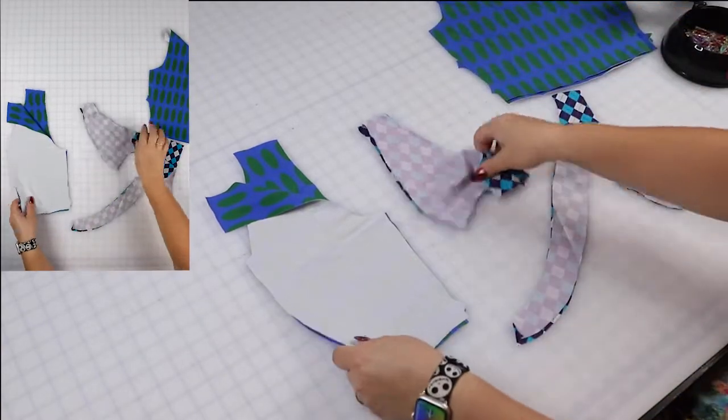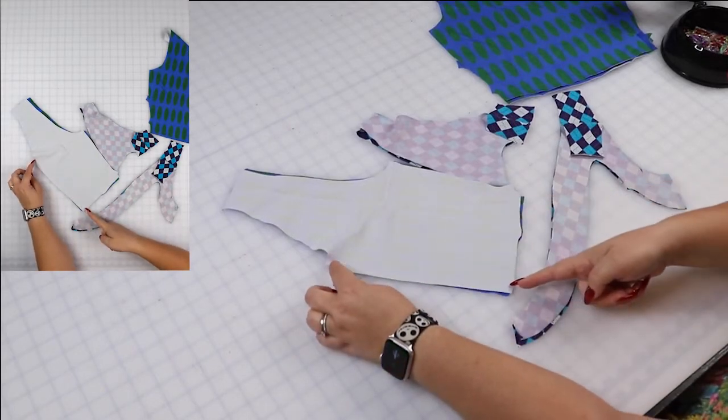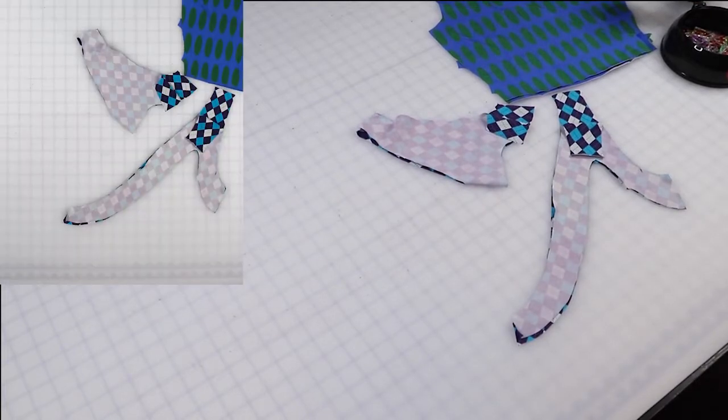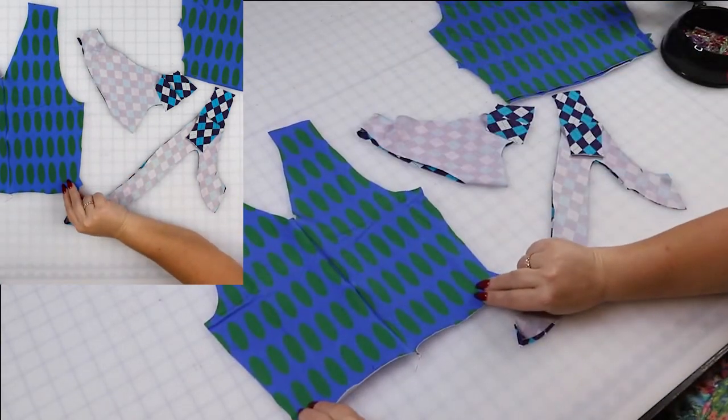So to start you're going to stitch the back seam like so, all down the back center. You can do that on a sewing machine or on your serger. Just remember that the seam allowance is half an inch for this pattern. Okay, so my back piece is sewn.